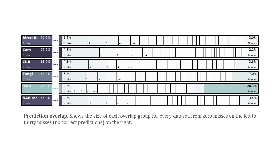Next, we show prediction overlap results for each dataset. The largest group in every case are the images that are correctly predicted by all models — we could call these the easy images. However, there is a sizable portion of each dataset that is incorrectly predicted by one or more models. Finally, we validate the existence of elusive images in all datasets, consisting of at least 2% of the images and up to 20% in the case of iCUB.